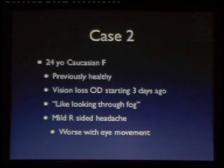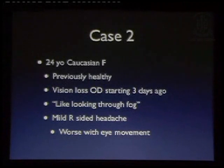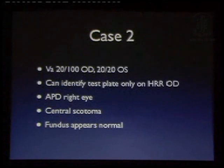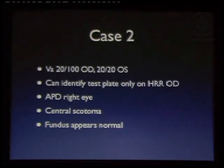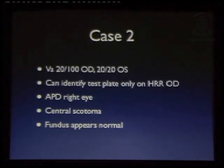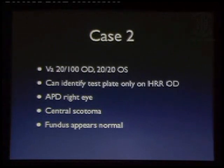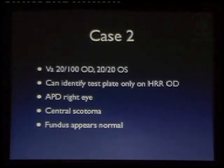Some areas where we do have better techniques. A 24-year-old young woman, previously healthy, presenting with vision loss in her right eye subacutely, like looking through a fog. She reports some pain with eye movement and a mild right-sided headache. She has decreased acuity in that right eye, a central scotoma by perimetry, an afferent pupillary defect, and very poor color vision as checked by the Hardy-Rand-Riddler plates. Her fundus is normal in appearance. As Dr. B. Rao told you, up to 70% of patients with this condition — which is, of course, optic neuritis — will not have disc swelling. In terms of predicting visual recovery, the presence or absence of disc swelling in optic neuritis is not the most important thing.